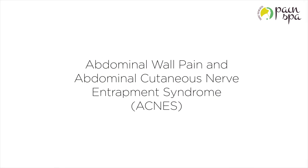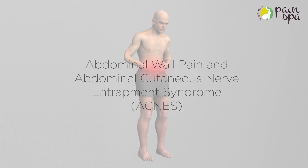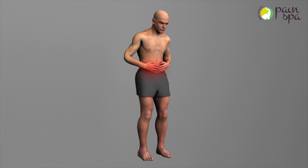Abdominal Wall Pain and Abdominal Cutaneous Nerve Entrapment Syndrome. Chronic abdominal wall pain refers to the pain originating from the abdominal wall, which is often misdiagnosed as arising from a source inside the abdominal cavity.